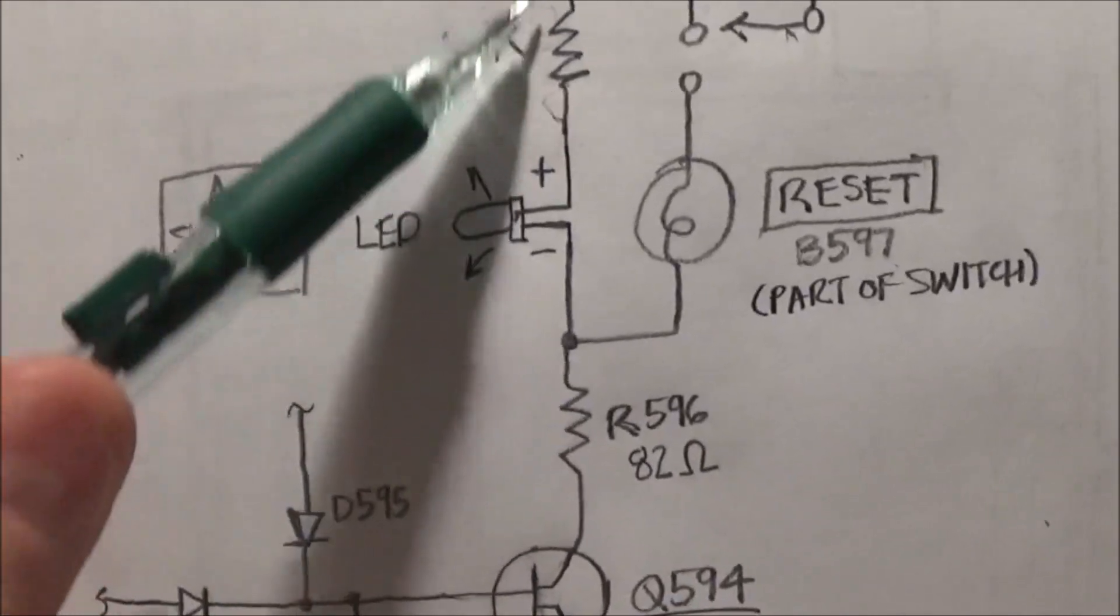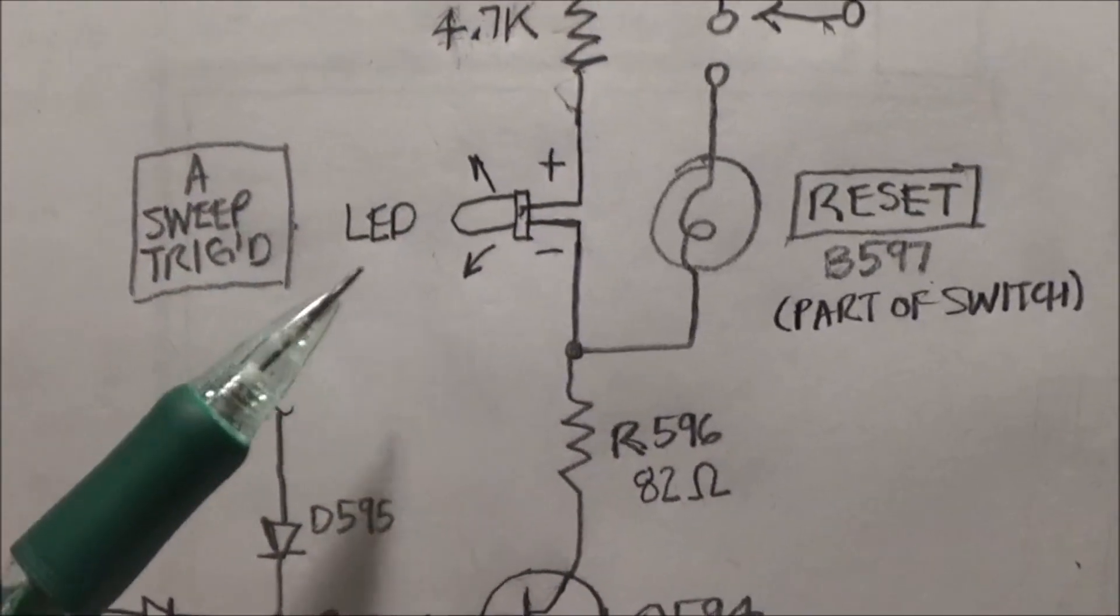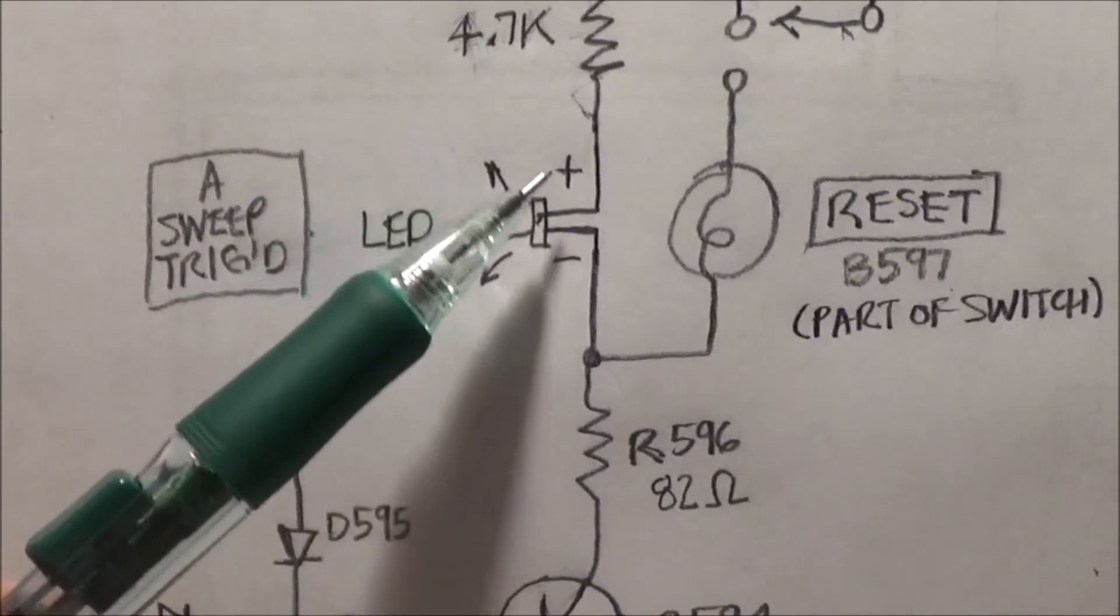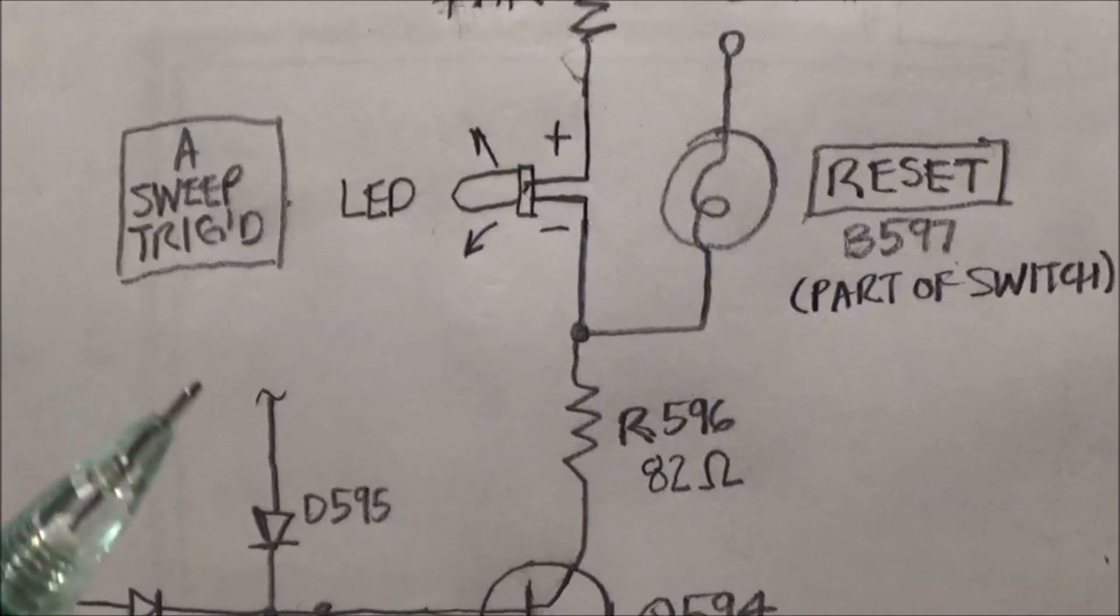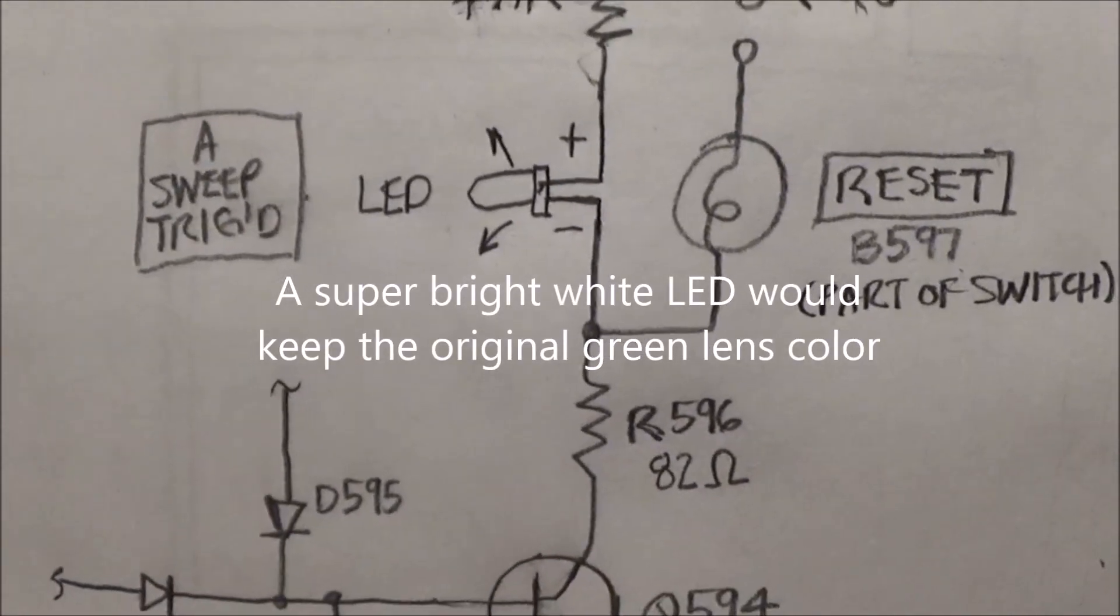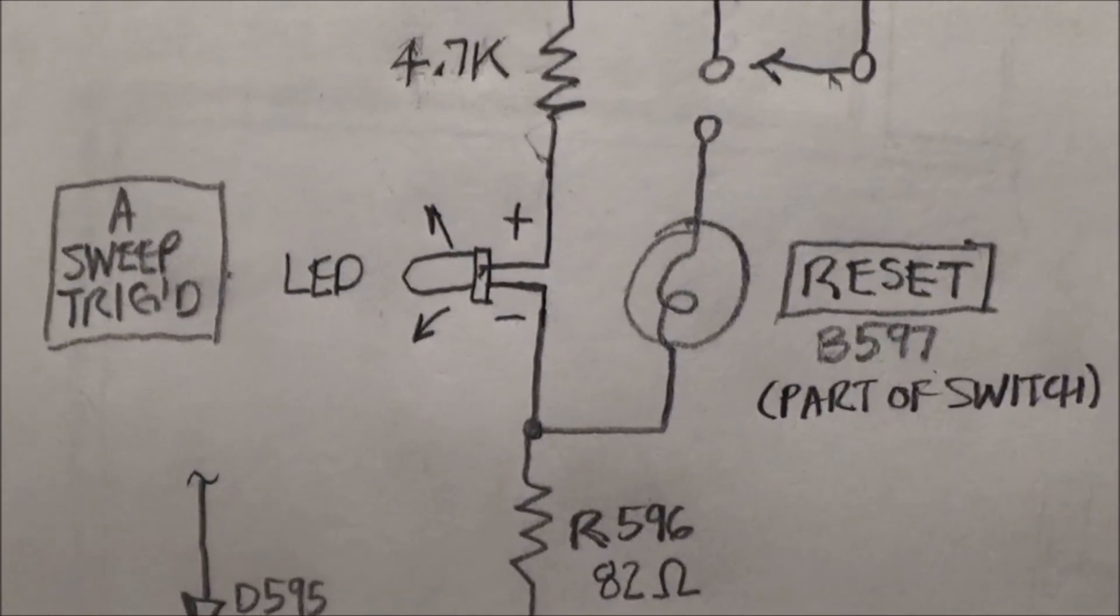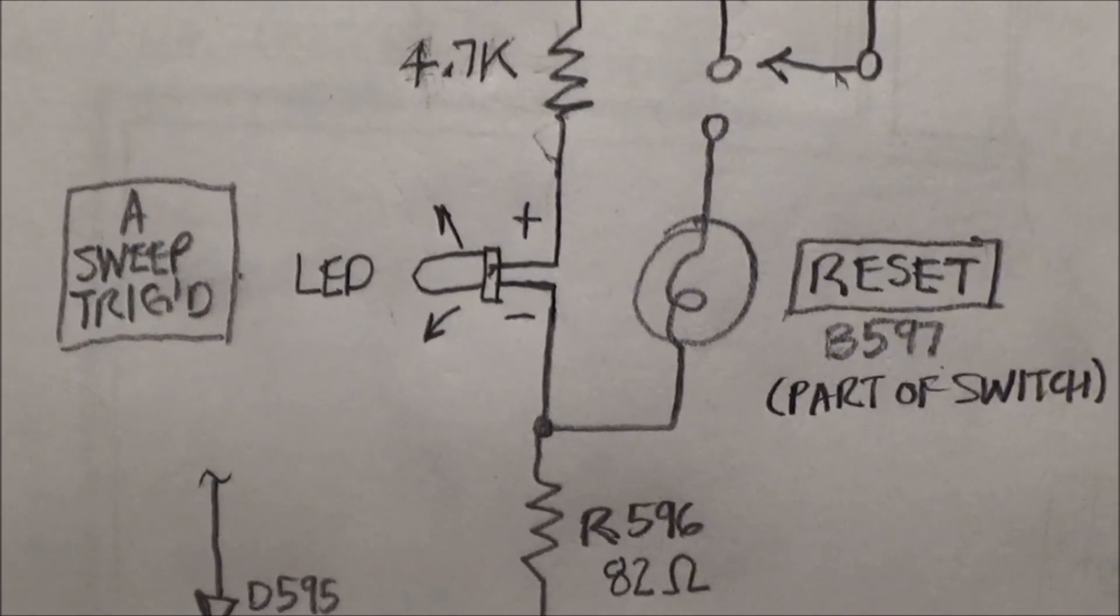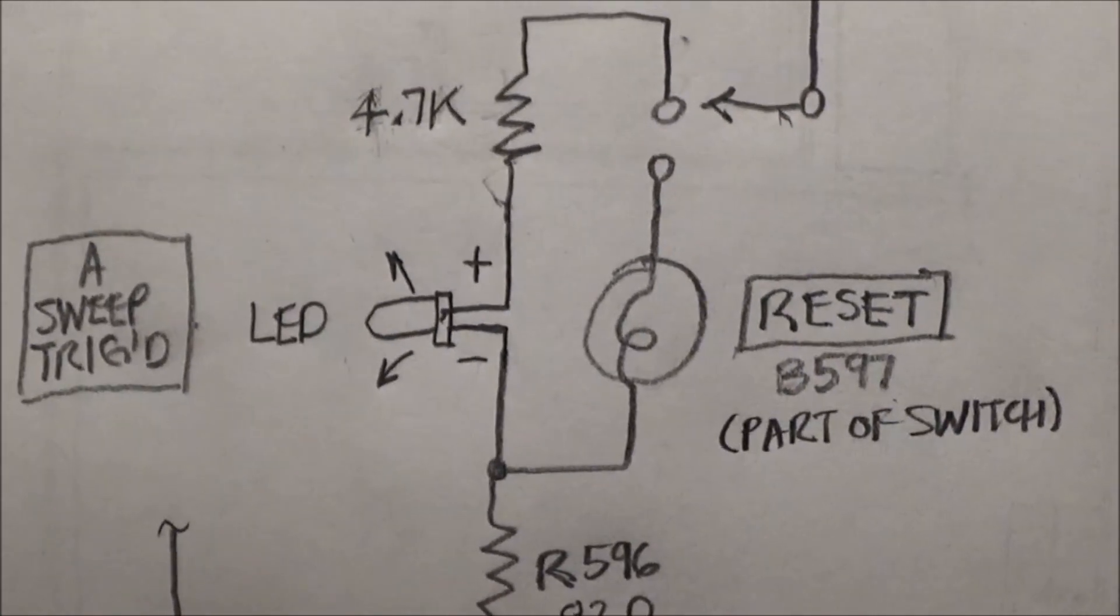And basically we're just replacing that little bulb with this LED. In this case I'm using one of these super bright blue 5mm LEDs that I've used in many of my guitar pedal builds. Works out pretty well. It's pretty bright, bright enough to shine through the little holder in the scope.